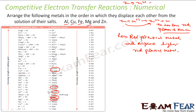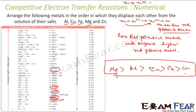The lower one on the reduction potential chart will displace the higher one. So the order will be: Mg first, then aluminium, then zinc, then iron, then copper. We have seen that zinc can displace copper, so this series is correct: magnesium, aluminium, zinc, iron, copper.